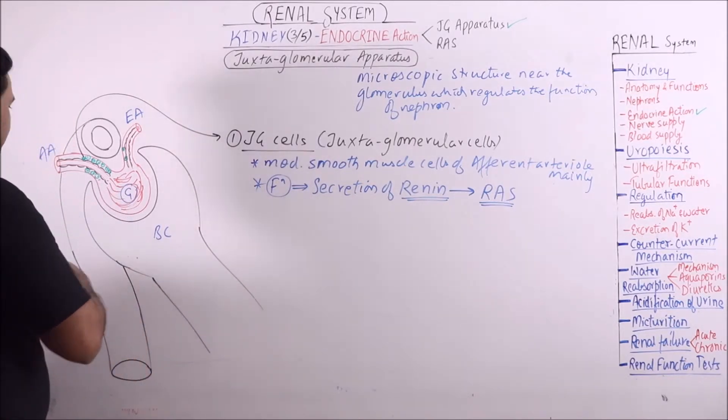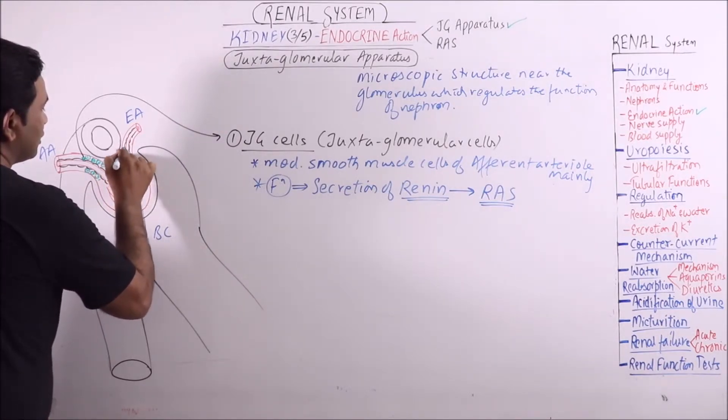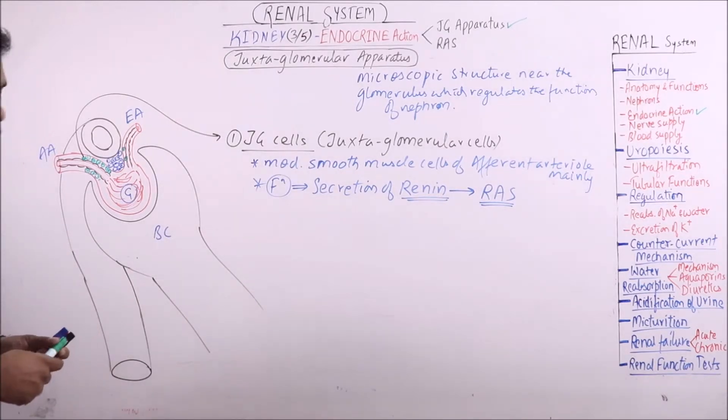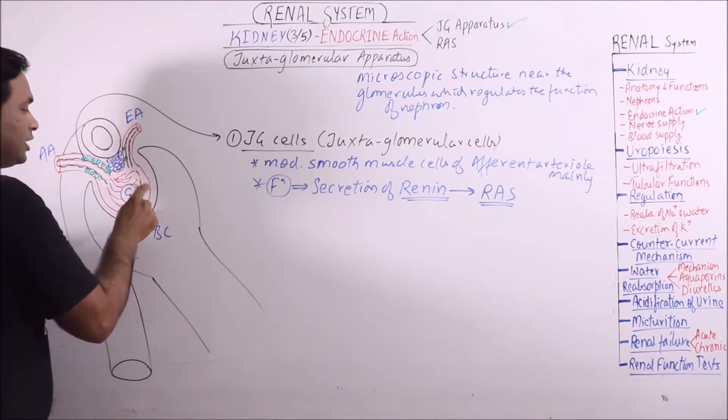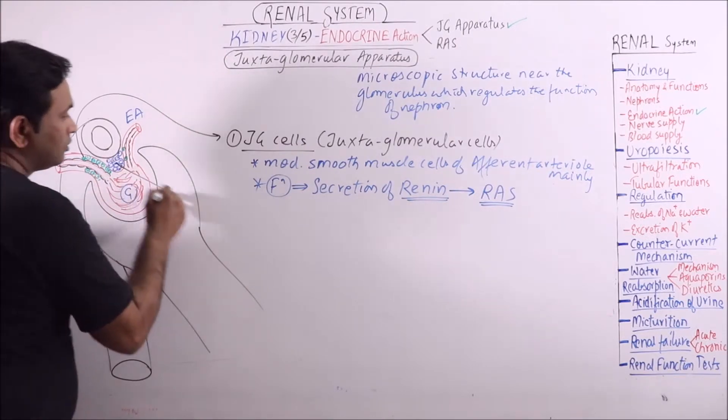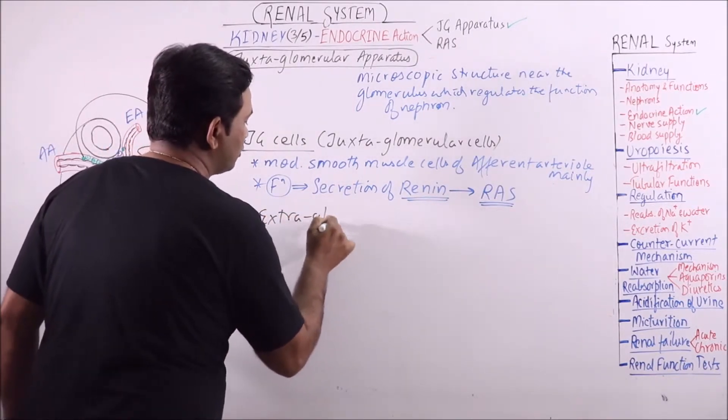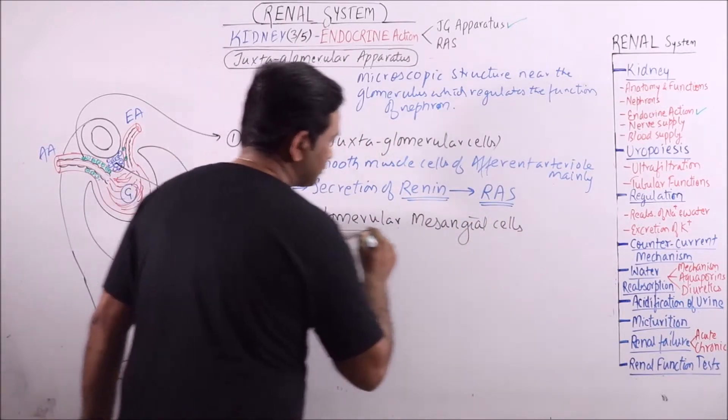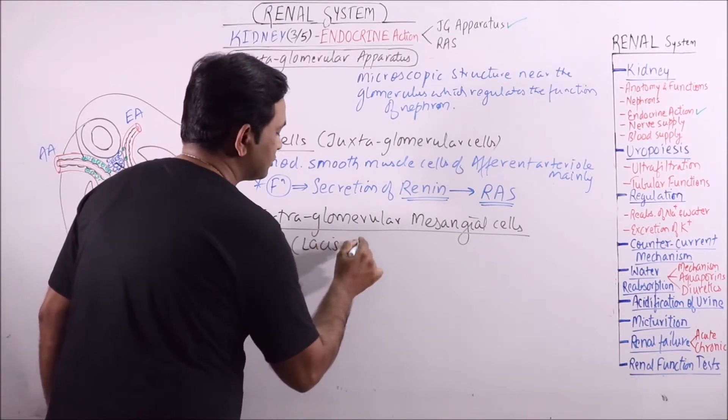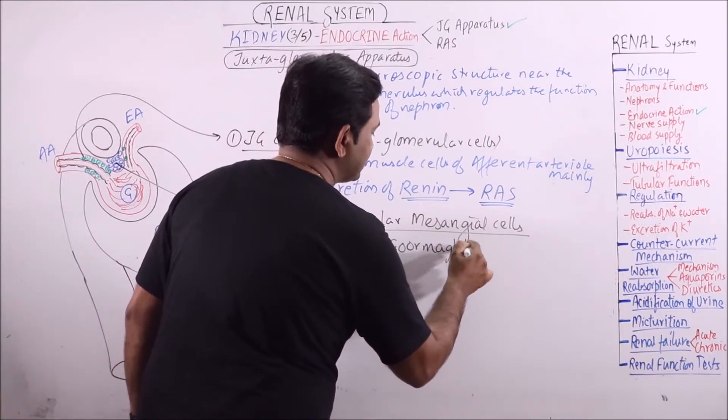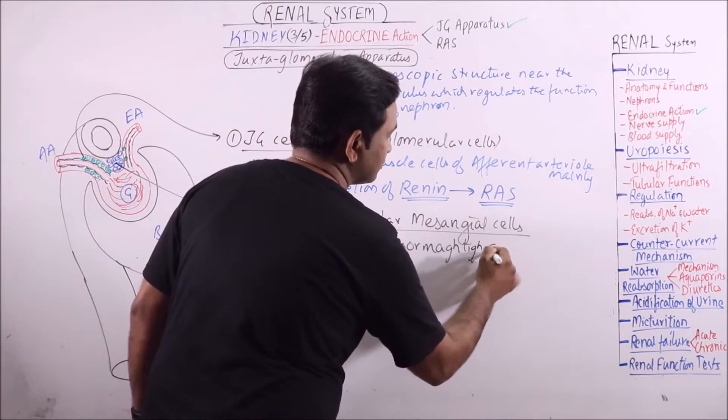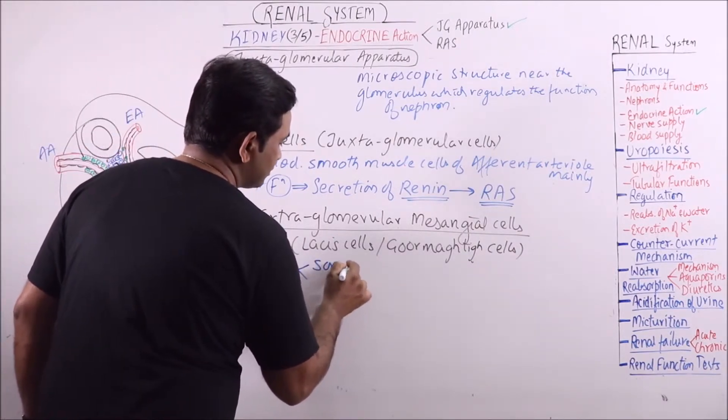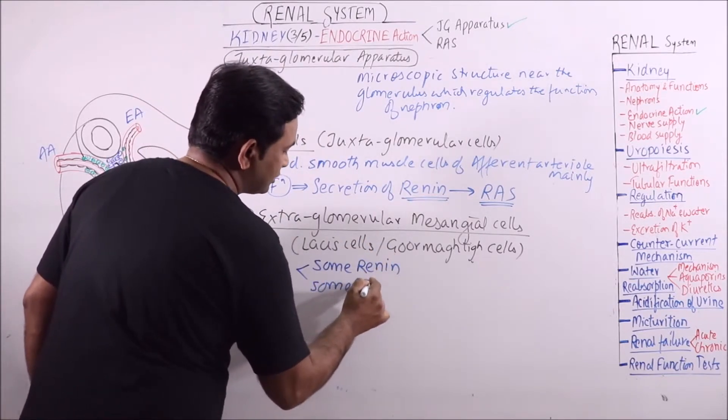Now the second component. We have discussed about the mesangeal cells which are of two types, that is intraglomerular mesangeal cells which are distributed in between the capillaries here. And these are the extra glomerular mesangeal cells. These are also known as lacis cells or Goormaghtigh cells. These cells secrete some renin and some erythropoietin.